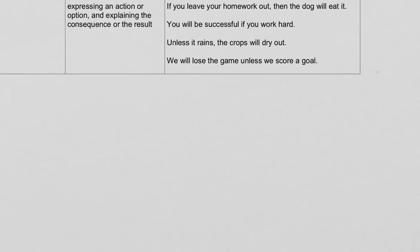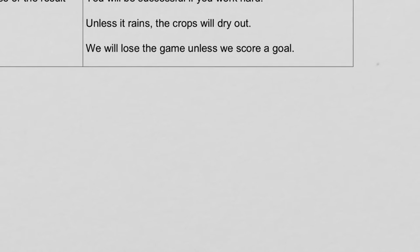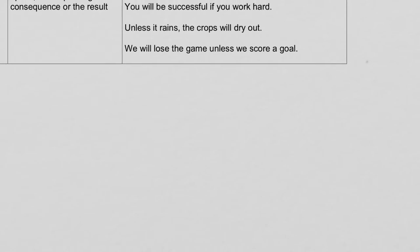Comparing 'if' with 'unless': 'Unless it rains, the crops will dry out.' We start with 'unless,' so we have a comma after 'rains.' Then putting 'unless' in the middle: 'We will lose the game unless we score a goal.' All those words need to go together, so we don't put a comma there.